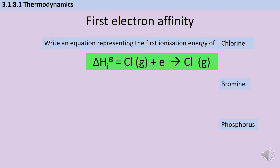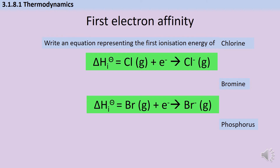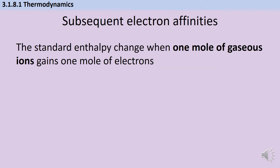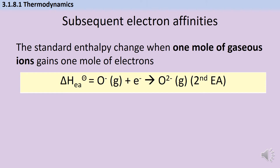We add one electron to one chlorine atom to get one chloride ion, and we do exactly the same for bromide and for phosphorus. Just like with ionization energies, we don't just have one electron affinity — we can have subsequent ones if an atom can receive more than one electron. Although the first electron affinity of a non-metal is exothermic, the second or third will be endothermic because we're adding an electron onto something that's already negatively charged. For example, the second electron affinity of oxygen: it's the second, so we finish with a 2⁻ charge, and only that second electron is being added.